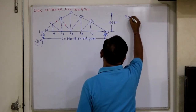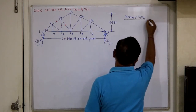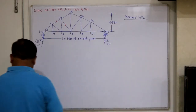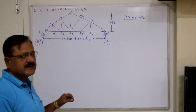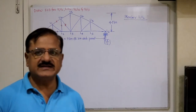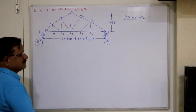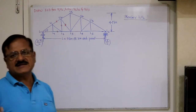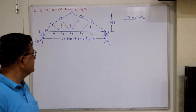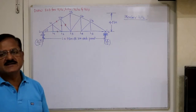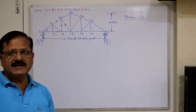Let's consider member U1-U2, which is a top chord member. To construct the influence line diagram for a top chord member, we have to locate the opposite joint. For top chord and bottom chord members, the maximum ordinate of the influence line diagram will occur at the opposite joint, and is given by the moment at the opposite joint divided by the perpendicular distance between the member and the joint.